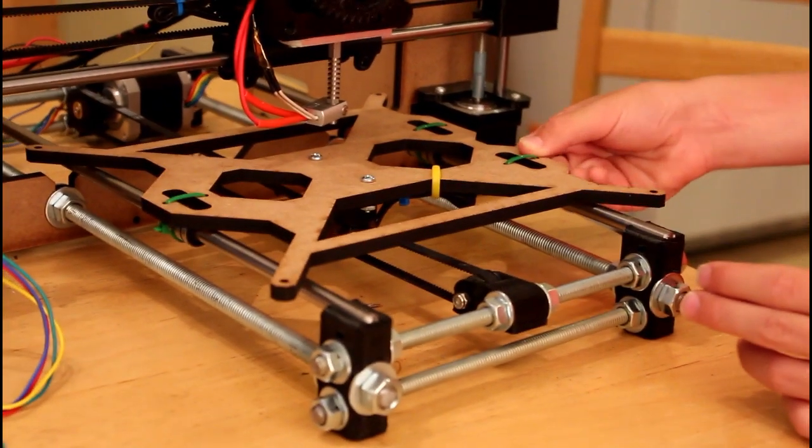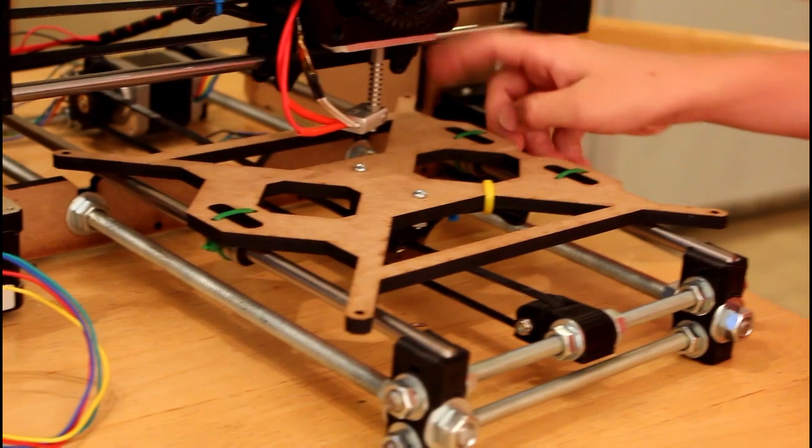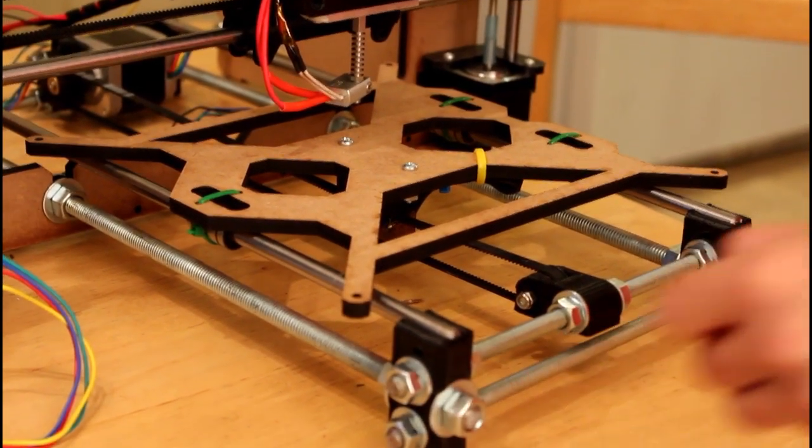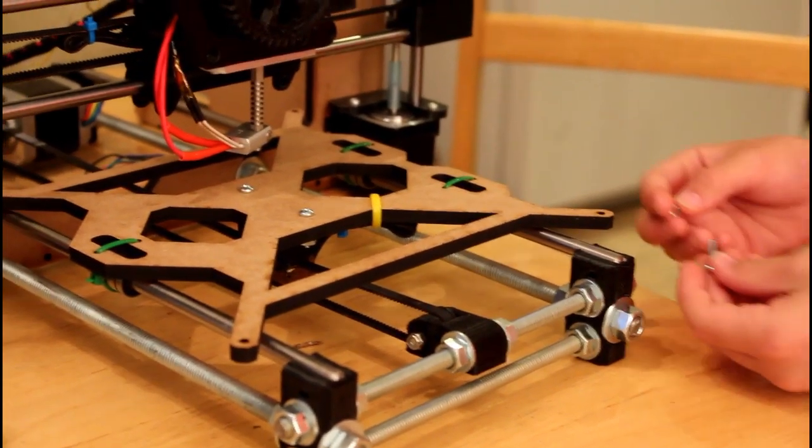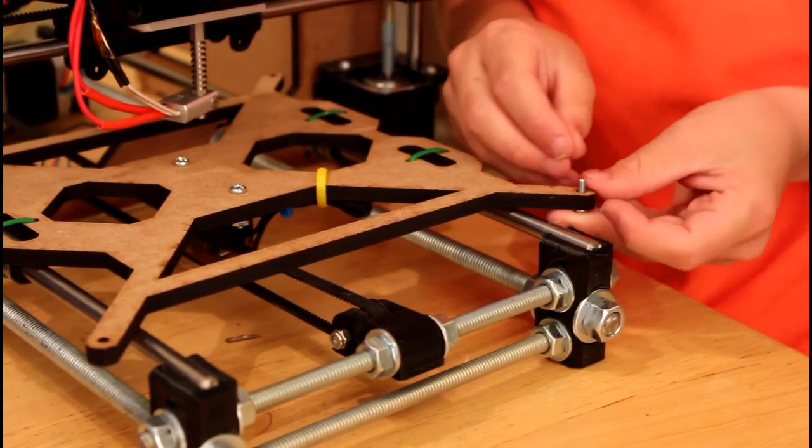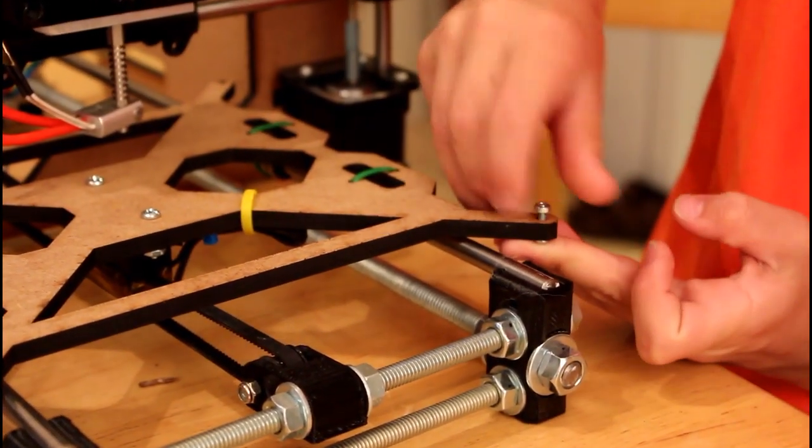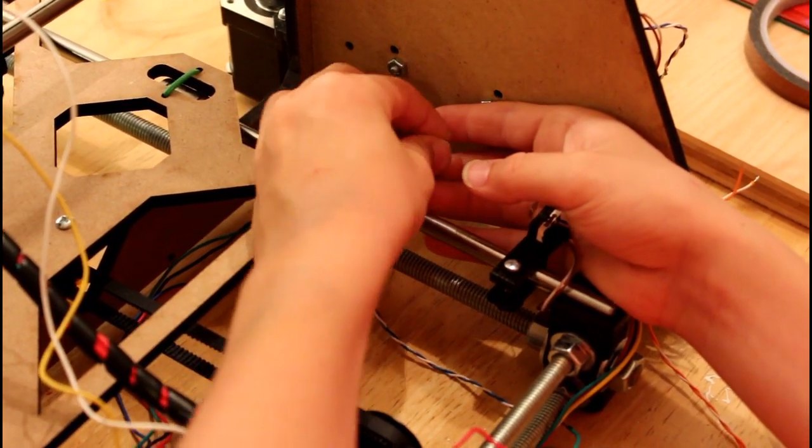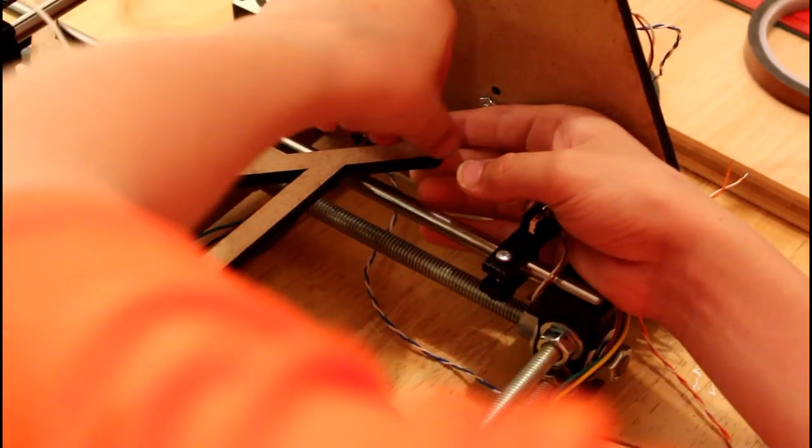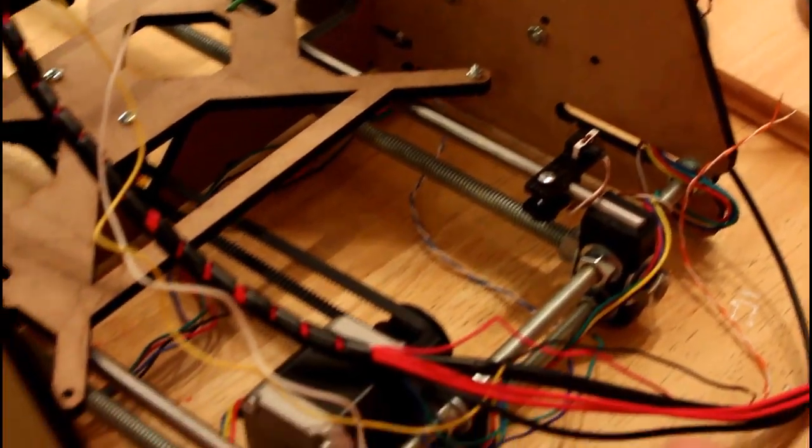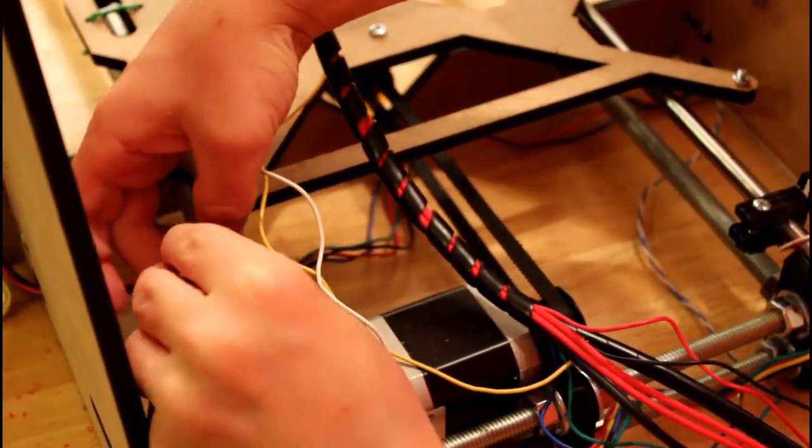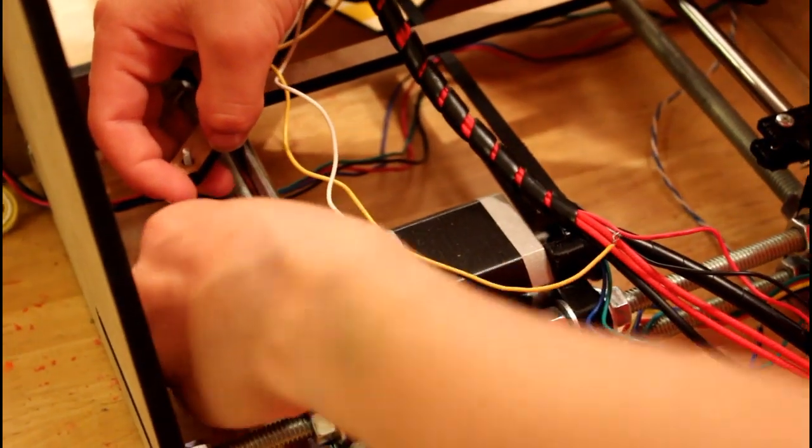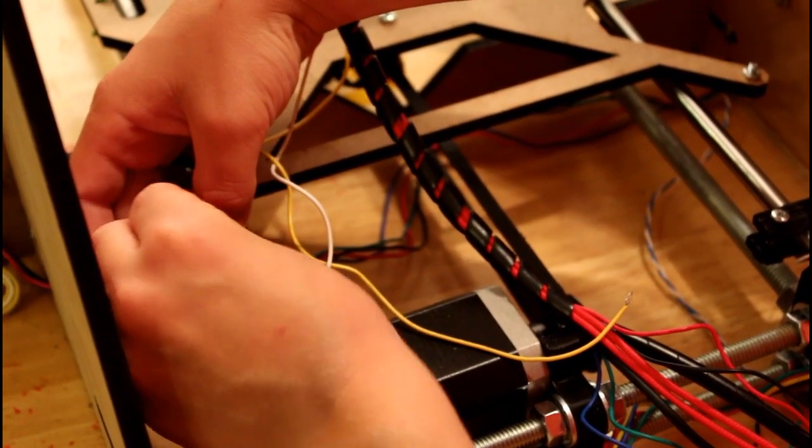We are building the Prusa i3, which has a different, a little different Y carriage. But your Y carriage will have four holes in each corner. And what we are going to do, we are going to do this a little different than most people do it. We are going to stick the screw up through that hole, then put the nut on. Do that with all four holes. Just make it finger tight for now.